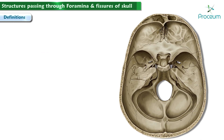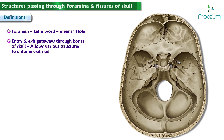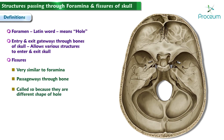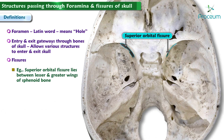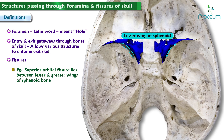Foramen is a Latin word for a hole. All of the foramen, or foramina, in the skull are holes. They are entry and exit gateways through the bones of the skull that allow various structures to enter and exit the skull. Fissures of the skull are very similar to foramina in that they are also passageways through the bone. They are called fissures simply because they are a different shape of hole — they look more like a crack or a cleft and typically occur between separate anatomical structures. For example, the superior orbital fissure lies between the lesser and the greater wings of the sphenoid bone.